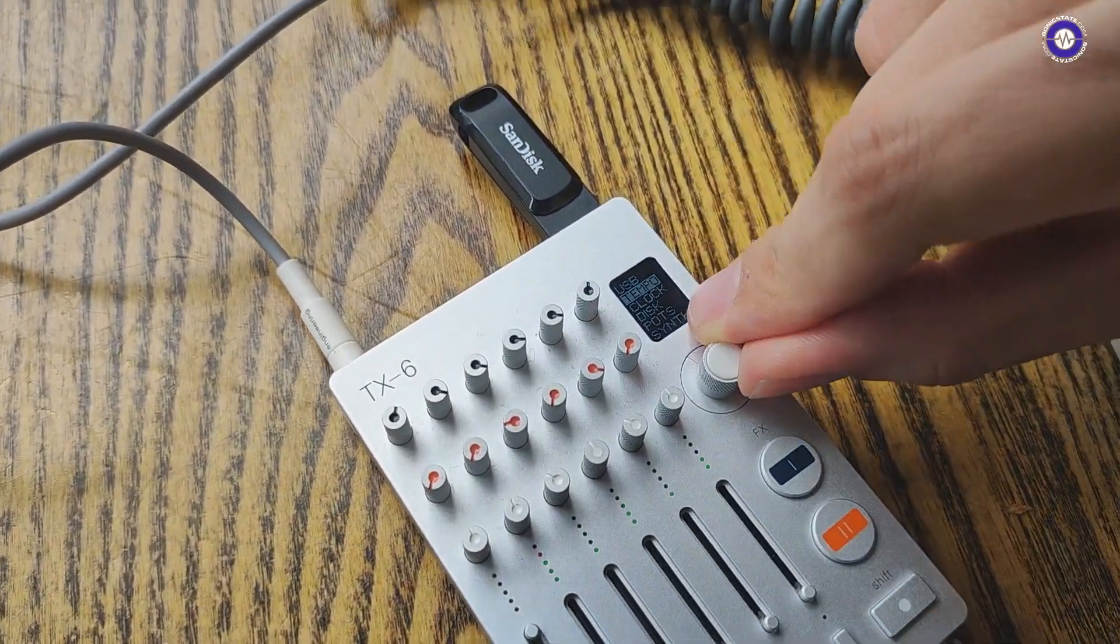Every single mechanical component in the TX6 is custom engineered. So each knob, potentiometer, slider, button, even the jacks, all of them we had to engineer from scratch because we wanted it to feel amazing and have the right resistance and the right size and the right feel and just have control over every single aspect of it so that it was as good as it can be. Because off-the-shelf components are great, but we really wanted to make it the best in its size.